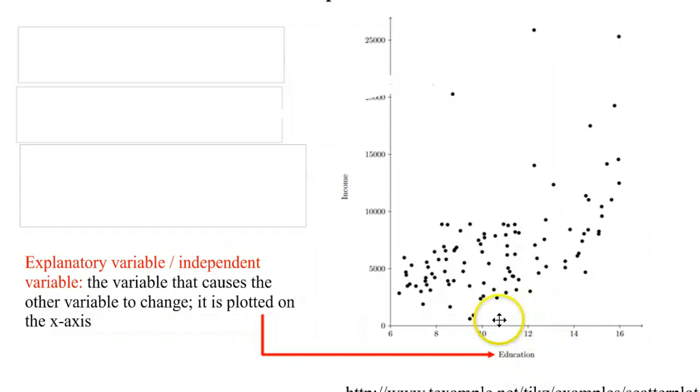So if you're suggesting that the number of years you go to school will cause your income, then you would put that down here on the x-axis.